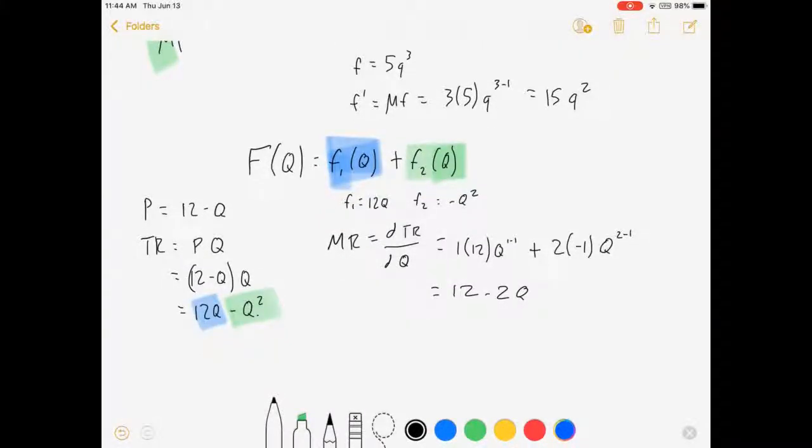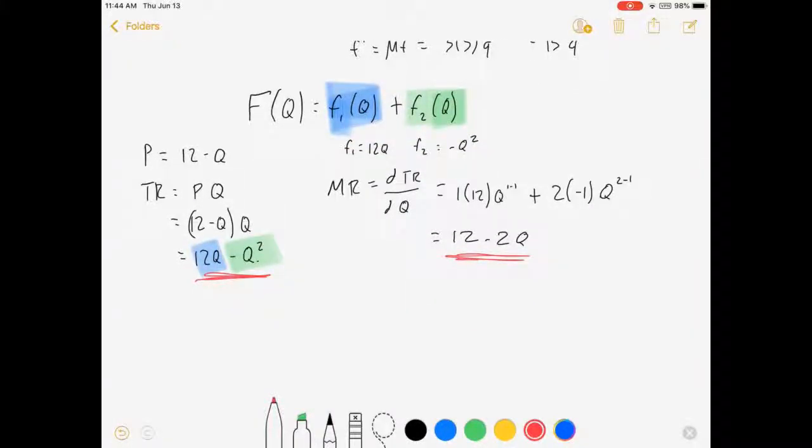So I was able to apply my power rule to this total revenue function, and by applying it to each piece and adding them together, I get this marginal revenue. Now one thing you might have noticed in my other videos or elsewhere in the class is I always tell you that when you have an inverse demand curve like 12 minus q, the marginal revenue curve will be the same curve but with double the slope. 12 minus q, 12 minus 2q. It comes out of the calculus on how we derive the marginal revenue curve, and it will always do that when we have a straight line.